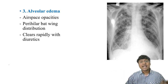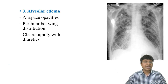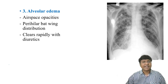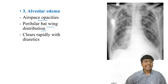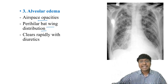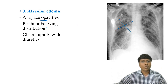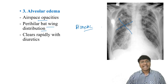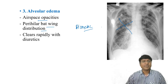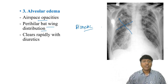As pressure increases further, fluid from the interstitium enters the alveoli, resulting in alveolar edema. The chest X-ray shows airspace opacities with perihilar bat-wing distribution. This alveolar edema completely clears with one dose of a loop diuretic — a high-ceiling diuretic — and is called flash pulmonary edema.